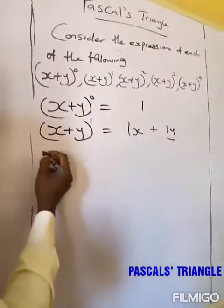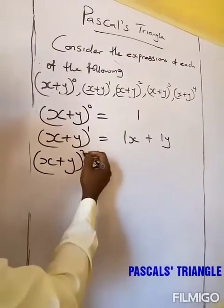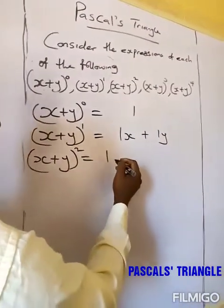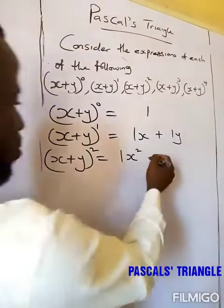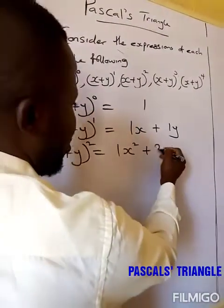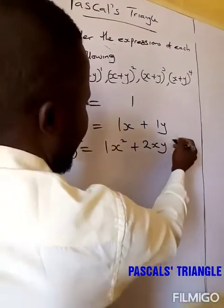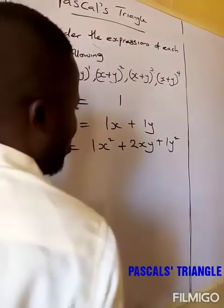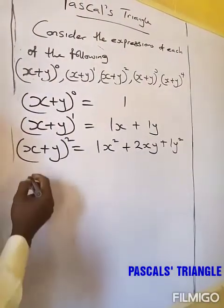The next one, which is (s + y) raised to 2. We are getting 1s raised to 2, plus 2sy, plus 1y raised to 2.